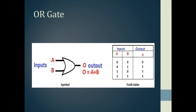First is going to be about the OR gate. This is basically the symbol of the OR gate, in which these two are inputs and this one is the output. The Boolean mathematical form of the OR gate is O equals A plus B. In the truth table, when both of the inputs are zero, the output would be zero, which means the LED would be off. But when any of the inputs is one, or both inputs are one, the output would be one.